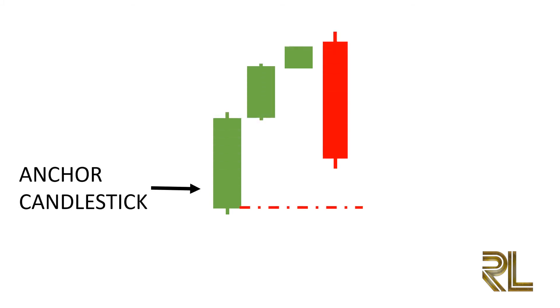In this case, a large bear candle doesn't necessarily mean that the sellers are getting stronger. Due to the strong upward trend of the first three bull candles, we must take into consideration the possibility of buyers who are now taking their profits. If you notice, the close price of the last bear candle did not go lower than the open price of the first bull candle — which is, you guessed it, an anchor candle. This means it's entirely possible for most of the selling activity at this point to be coming from buyers who are exiting their positions.